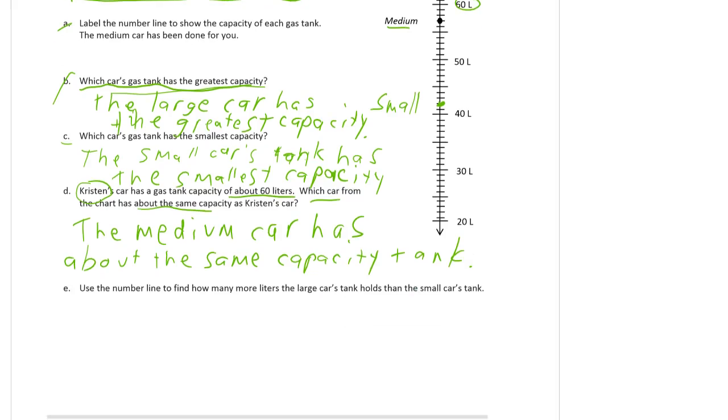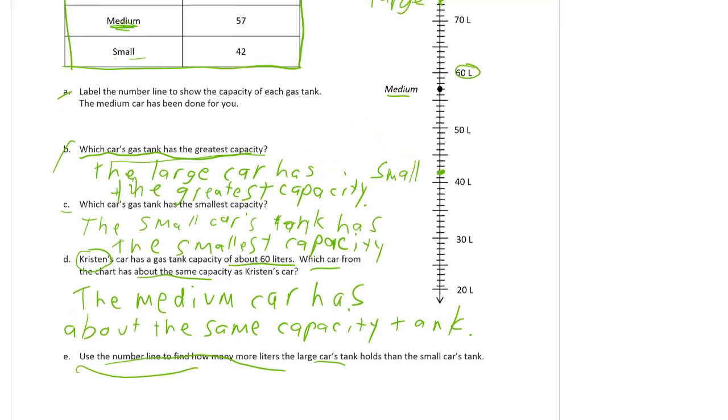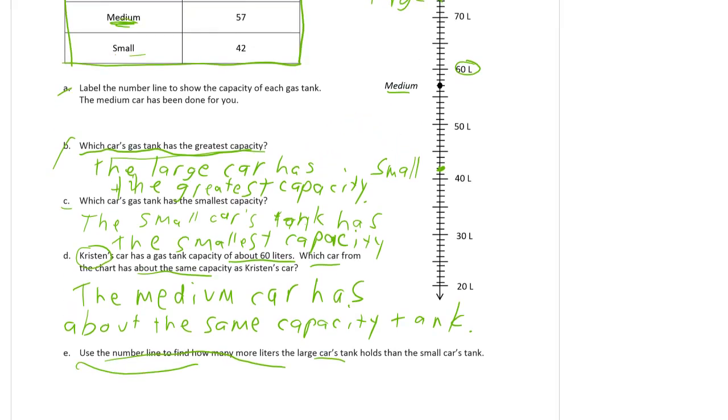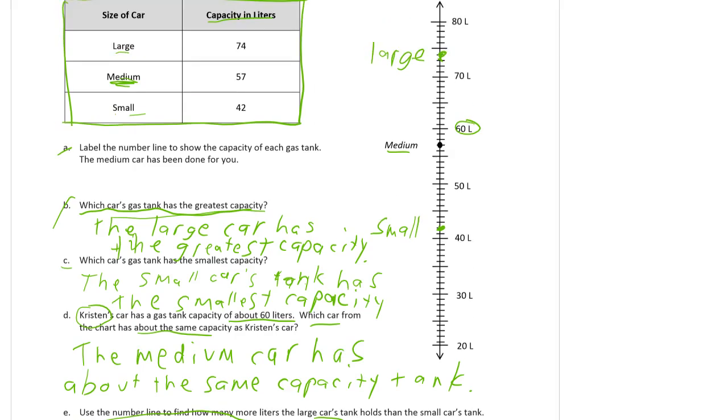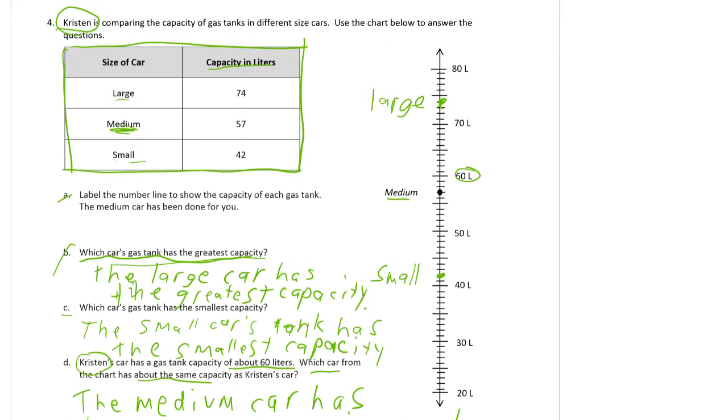And then finally, use the number line to find how many more liters the large car's tank holds than the small car's tank. We could use subtraction and a number bond or a tape diagram, but it says to use the number line, so we're going to use the number line. We're going to count up from the small tank to the large. The small here, may as well label this at 42, and the large I'm labeling at 74.